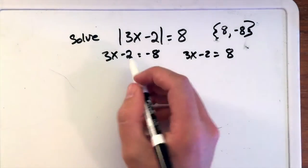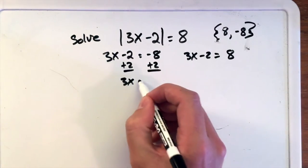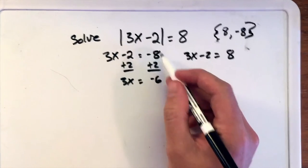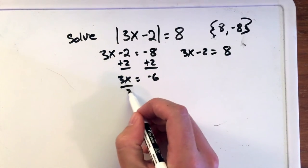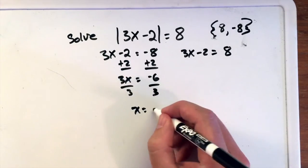So let's solve the left equation first. We're going to add 2 to both sides, and we're left with 3x equals negative 6. Remember, negative 8 plus 2 is negative 6, and then we divide both sides by 3 and we have x equals negative 2.